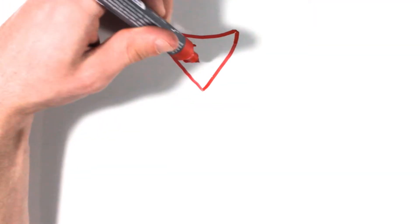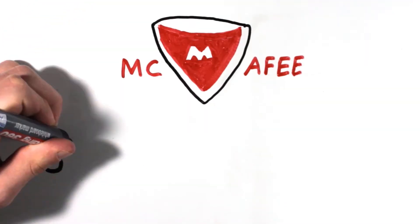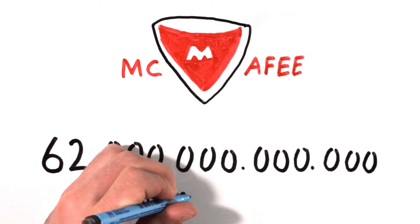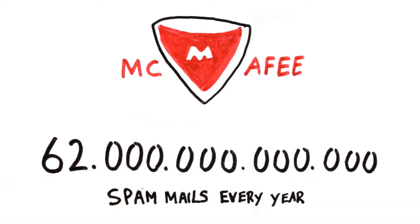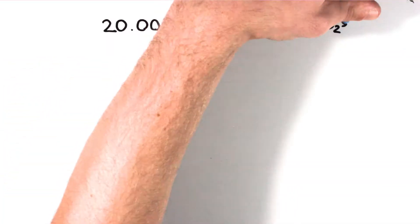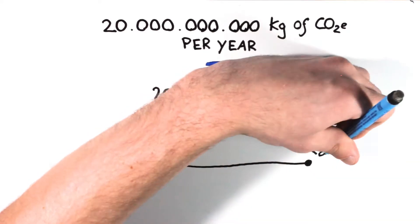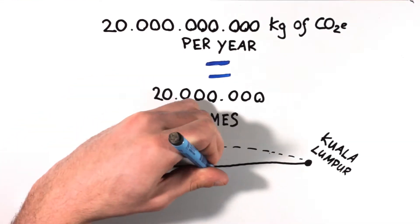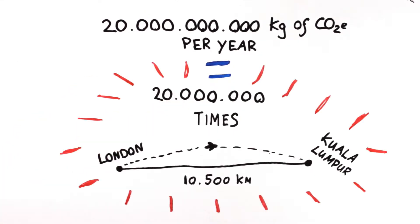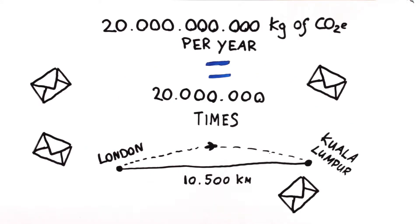Spam may seem like a small portion in this way but research by McAfee found that 62 trillion messages are sent every year which equals around 20 million tons of CO2 equivalent per year. This is equal to flying 20 million times from London to Kuala Lumpur which is around 10,500 kilometers. And we didn't even count the normal emails you send every day. That's a lot of impact for something we don't even want, isn't it?